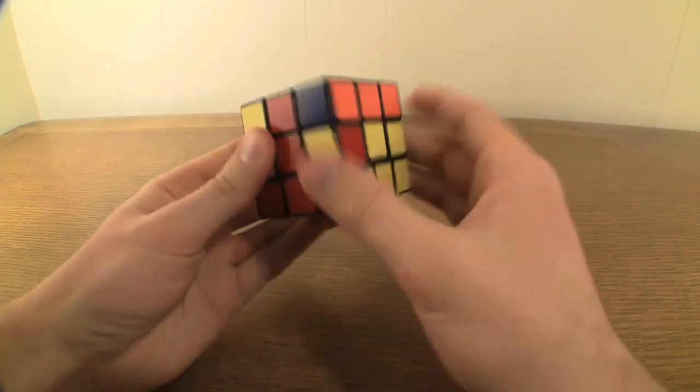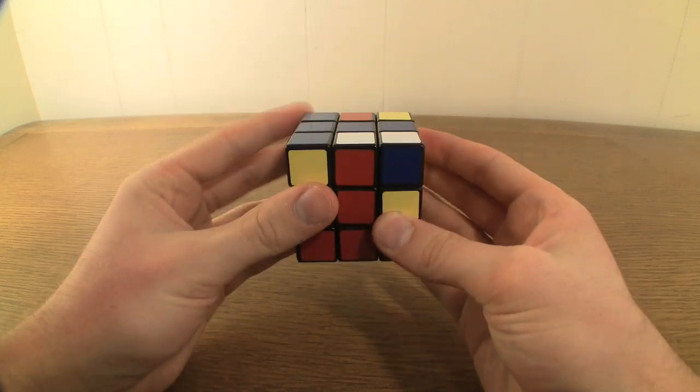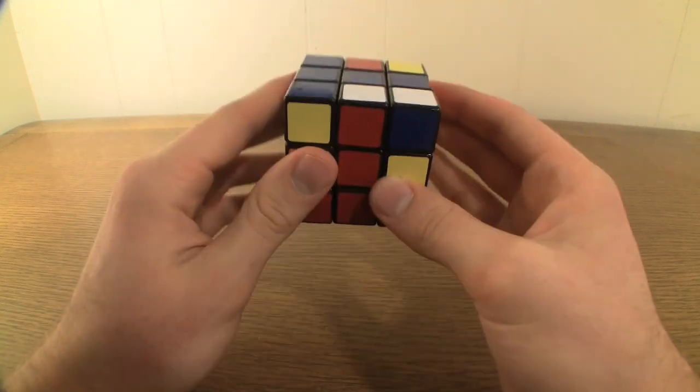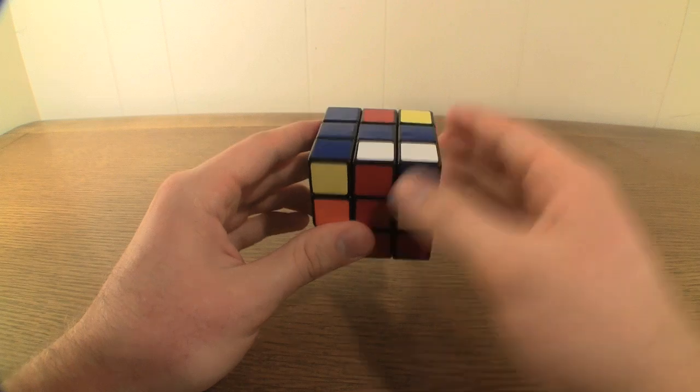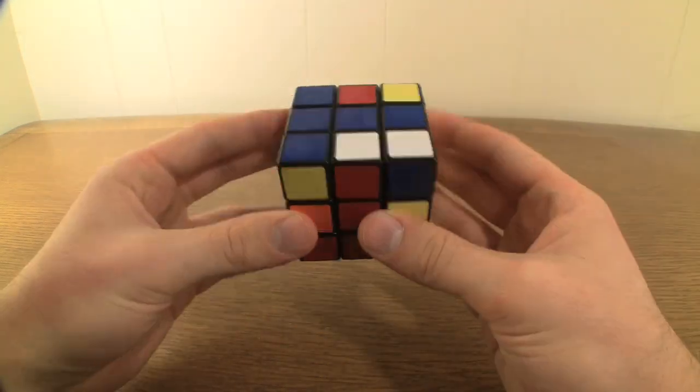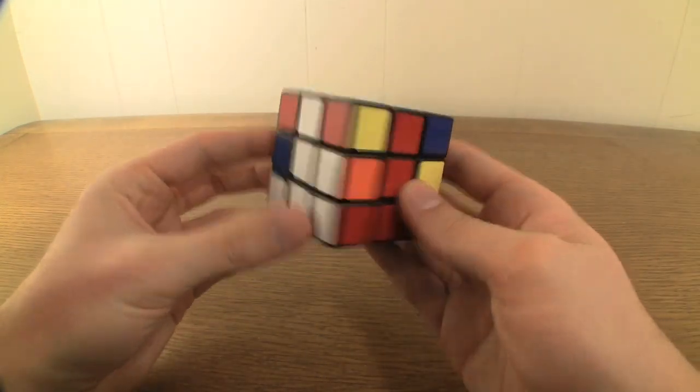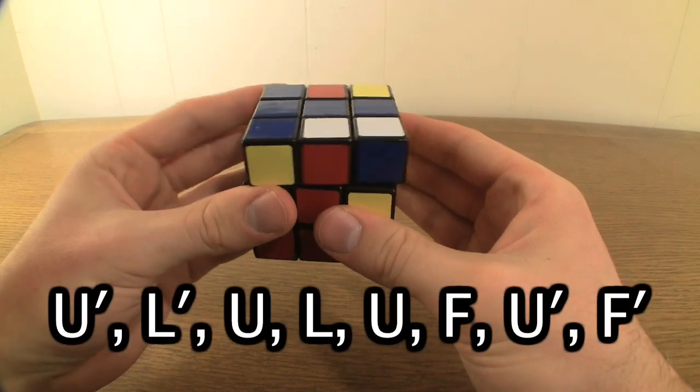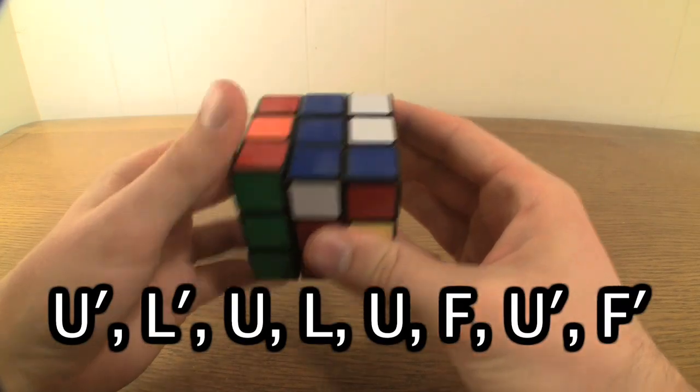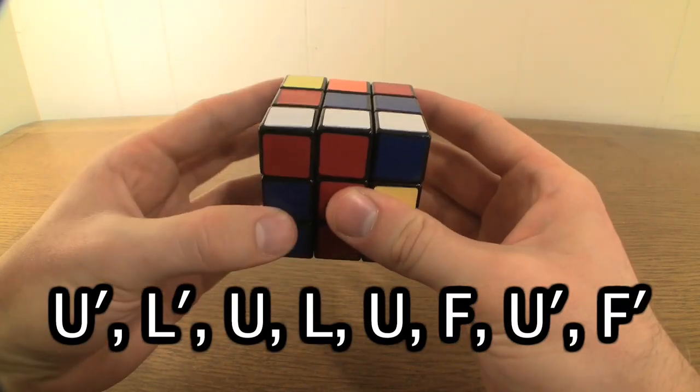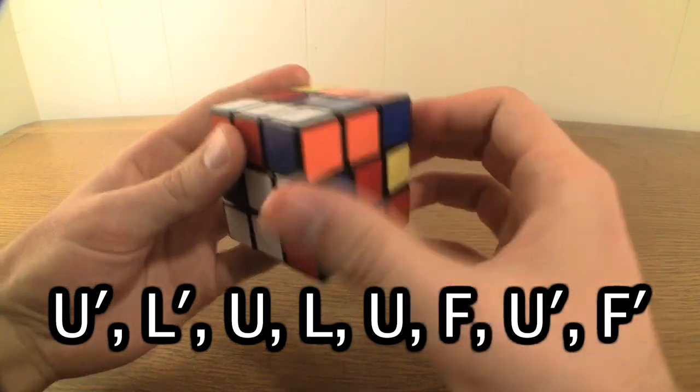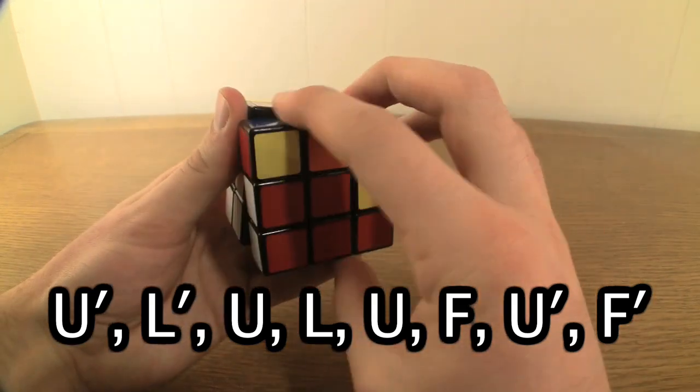Looking at the right and left faces of the cube, you'll notice that one of them is the same color as the part of the edge piece in question facing the sky. If this is the left face, as is the case right here, perform the algorithm U' L' U L U F U' F'.